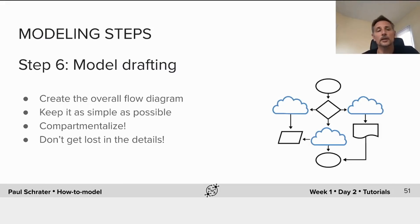When we draft the model, what we want to do is create an overall flow diagram that will pull the pieces together of our hypotheses into a set of code relationships. We want to keep it as simple as possible. We want to compartmentalize, and we can't really get lost in the details.